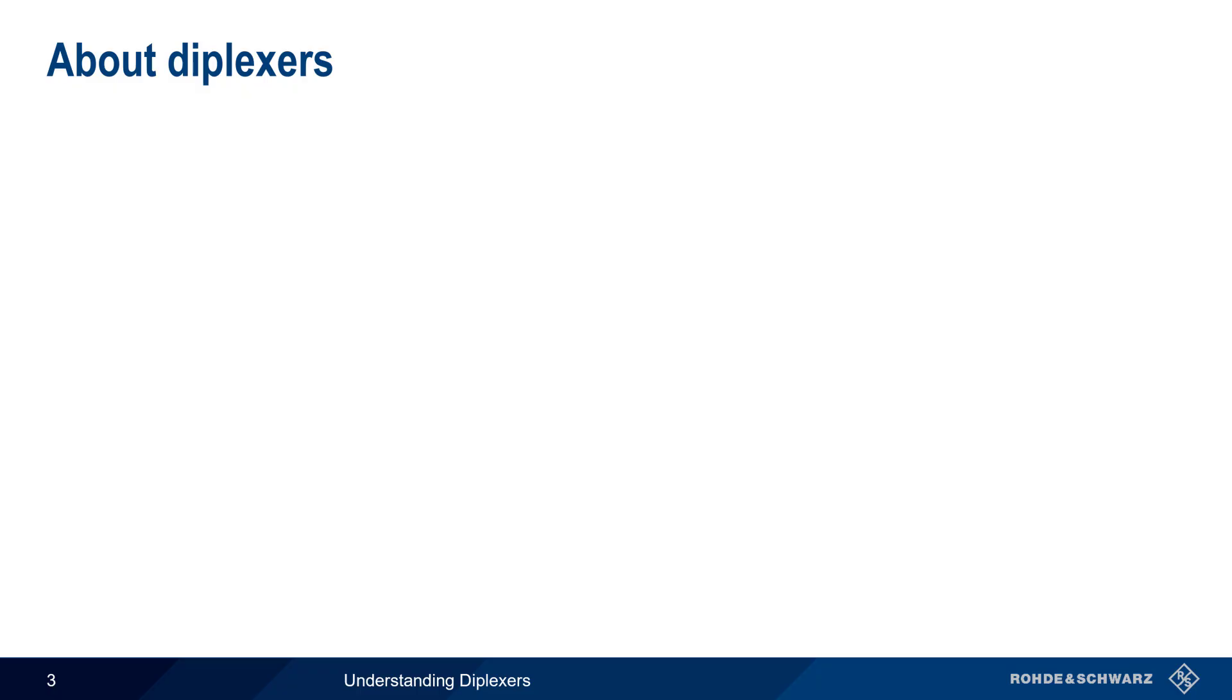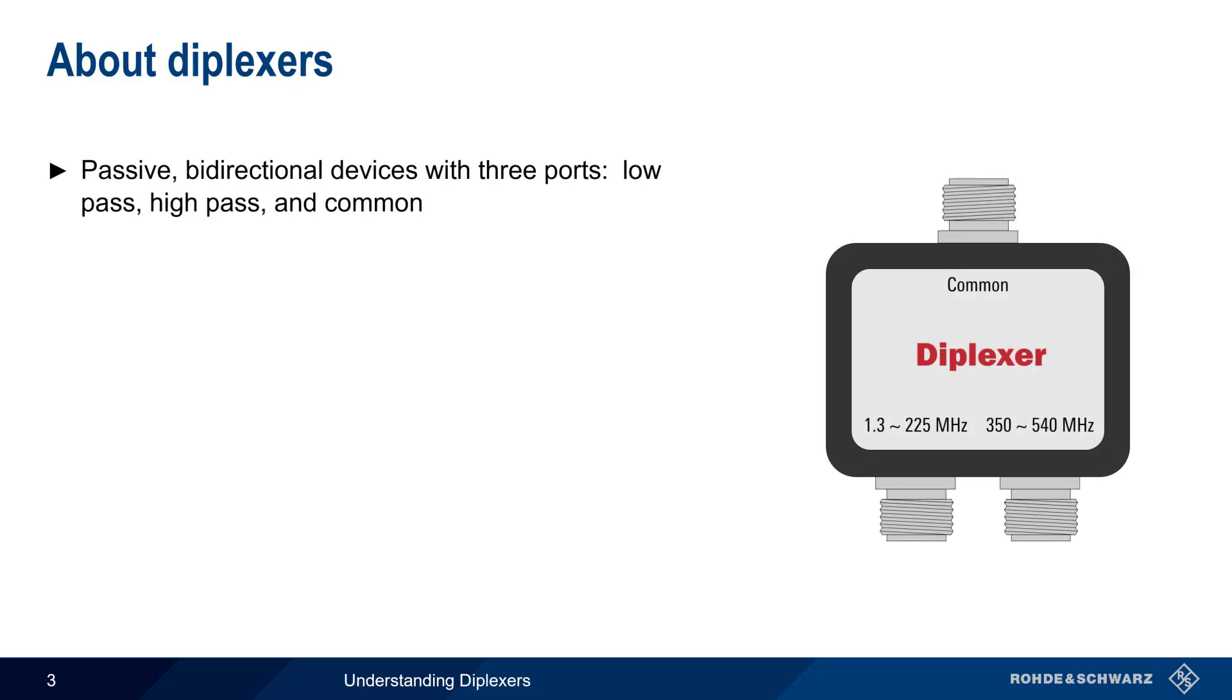Let's start by defining what we mean by a diplexor. Diplexors are passive, bidirectional RF components with three ports: a low-pass port, a high-pass port, and a common port, sometimes also called a mixed port.